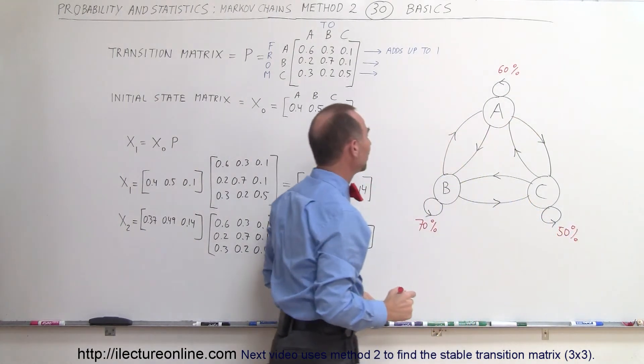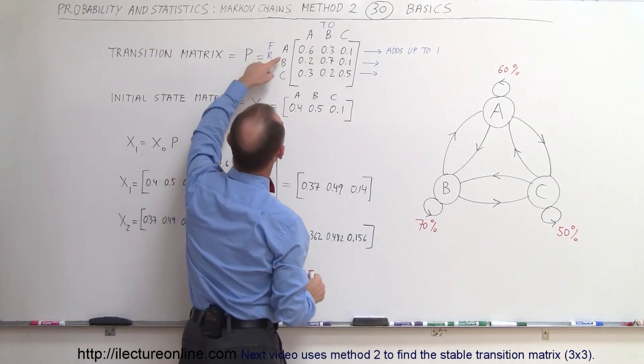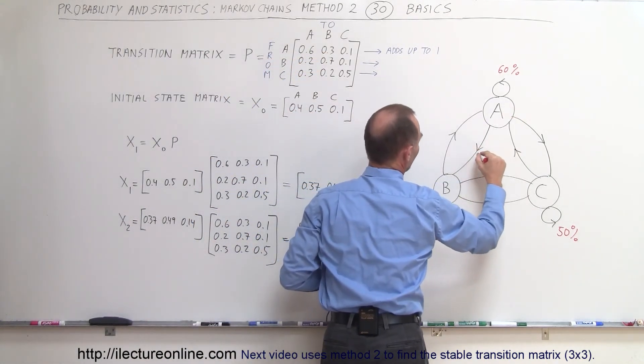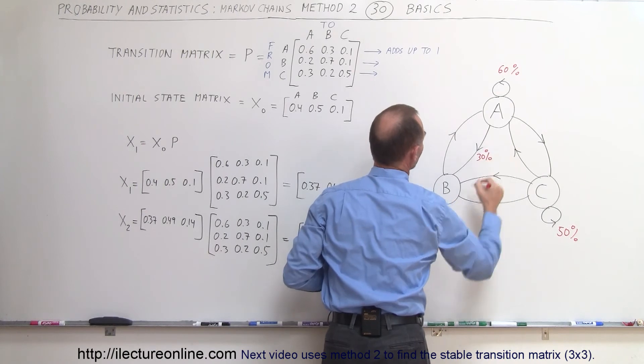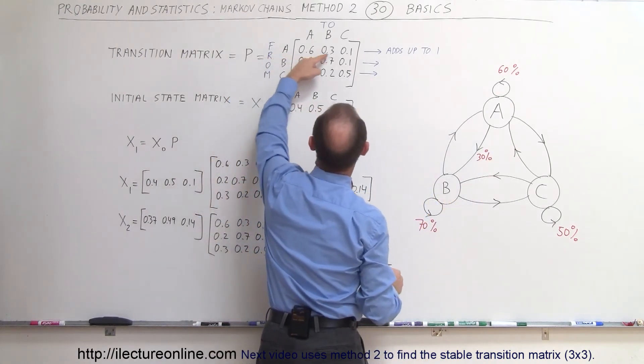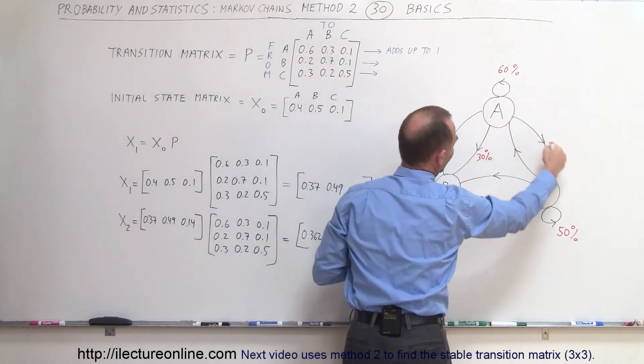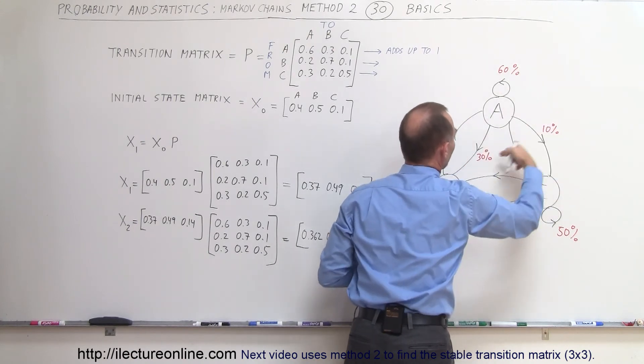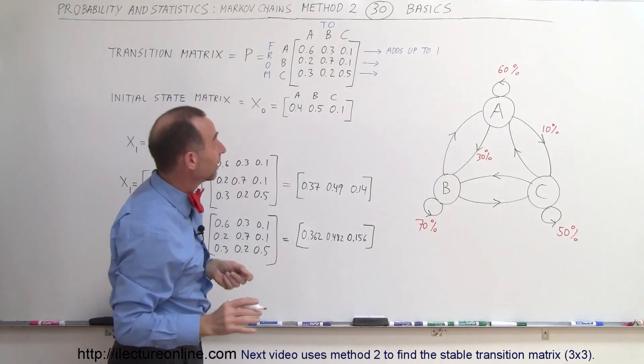Okay now for the other transitions so from A to B is 30 percent so from A to B is 30 percent so 30 percent over here and from A to C is 10 percent so A to C that would be 10 percent and those three better add up to 100 percent which that's the case.